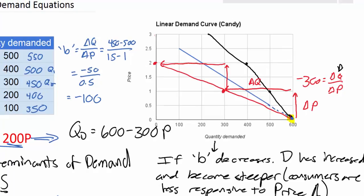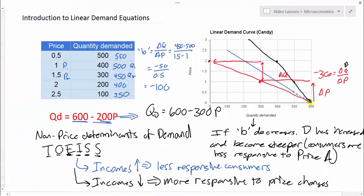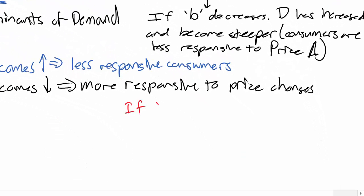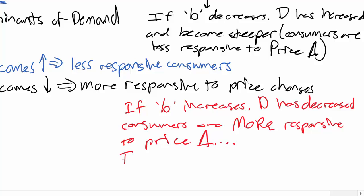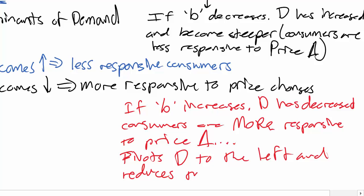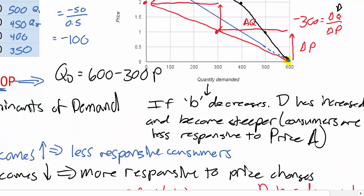The conclusion: if the B variable increases, demand has decreased because consumers are more responsive to price changes. This pivots demand to the left and reduces the slope — the demand curve becomes flatter when the B variable increases. That is because the responsiveness of consumers to price changes is increasing when the B variable increases.